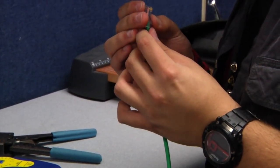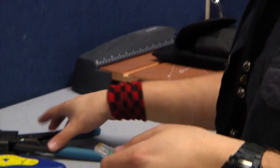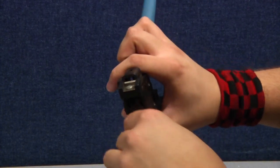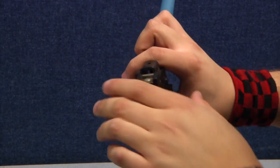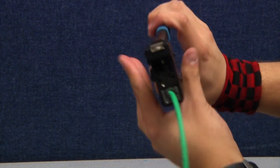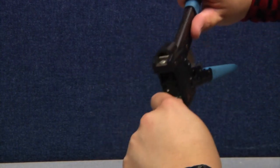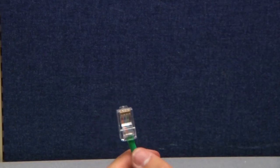That means it's all in and ready for you to crimp. You take the crimper, you insert it into the slot here, make sure it's all the way in, make sure the cable is all the way in the connector. And then you just crimp it like that. You pull it out, and then you're ready to do the other side.